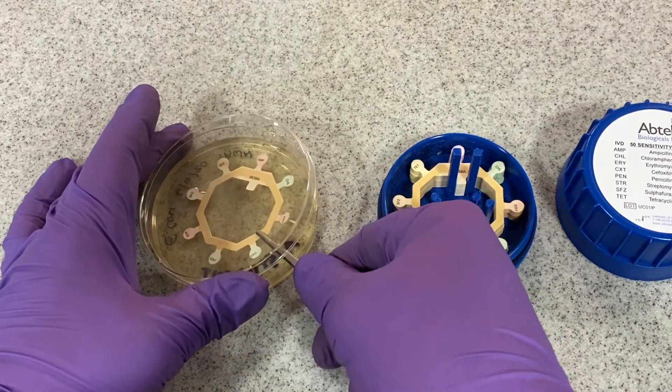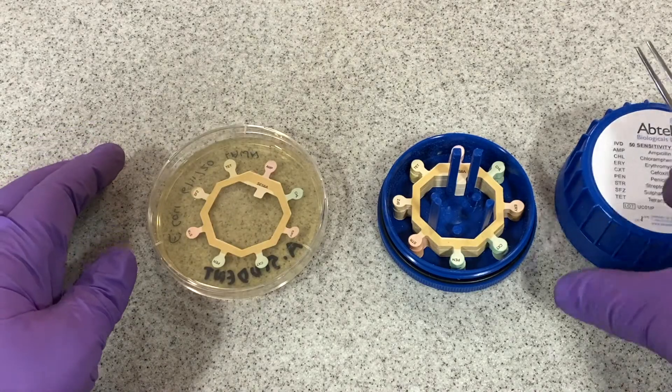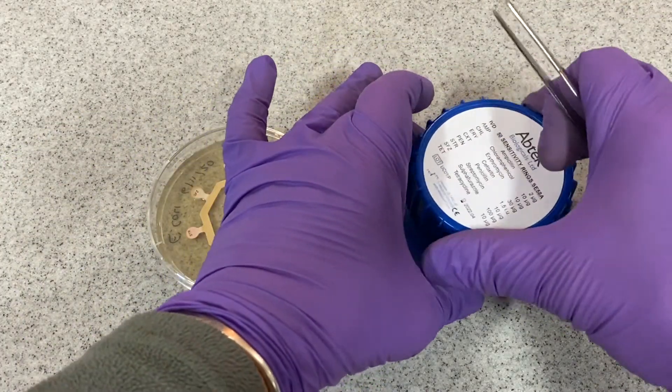The antibiotic ring is placed into the petri dish by moving the lid of the petri dish slightly upward without removing it.